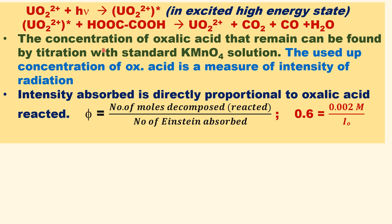This is a photosensitized reaction. Uranyl absorbs a photon of light to undergo a photo-excited state. When it interacts with oxalic acid, the C-C bond in oxalic acid is broken. The excited molecule decomposes oxalic acid into CO₂, CO, and water.